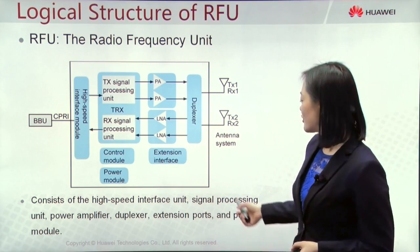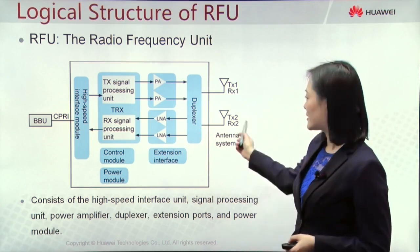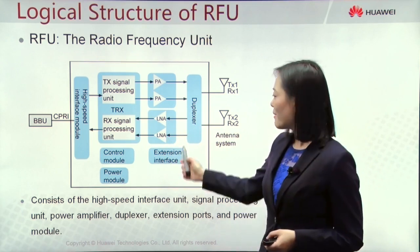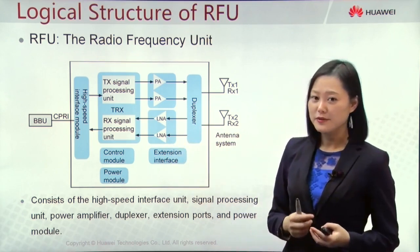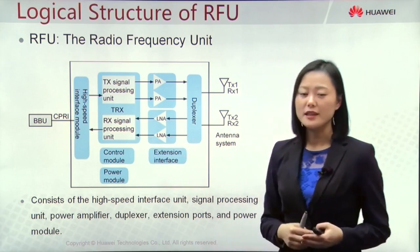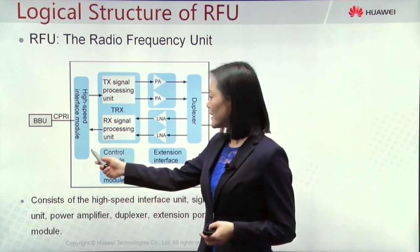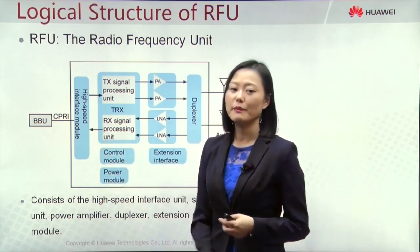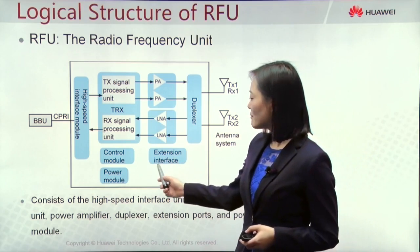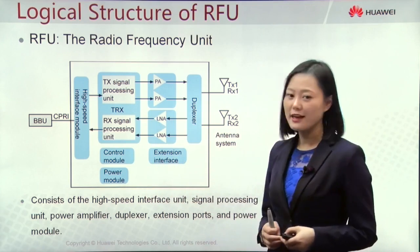For the uplink, the duplexer filters the useful signal received from the antenna system and sends it to the LNA, low-noise amplifier, to amplify the very weak radio signal. It is then sent to the RX signal processing unit to convert the radio signal to a baseband signal. The high-speed interface module then sends this signal to BBU. Inside the RFU there are also other modules like a control module, power module, and extension interface to support the RFU functions.